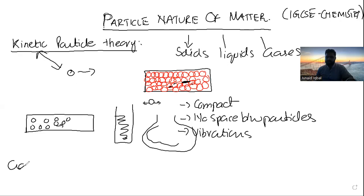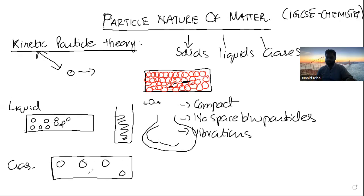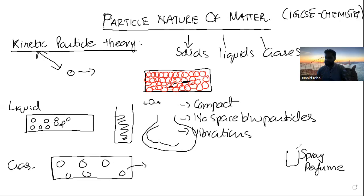Now let's come to gas. The particles of gas are far distant from each other, and that's the reason they move very quickly. For example, if you spray perfume at one end of the room, in some minutes it just spreads from here to there. Why is it happening? Because the gas particles are distant from each other and they move very quickly.